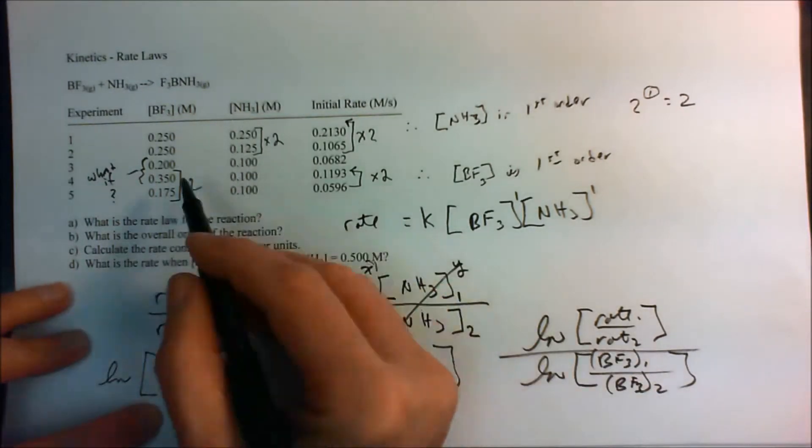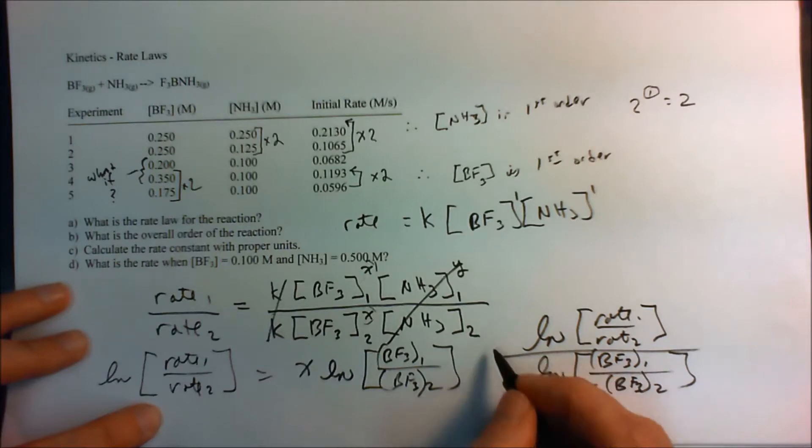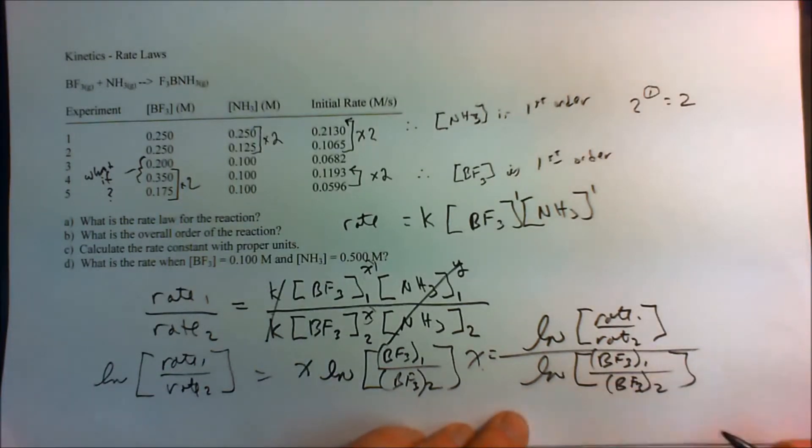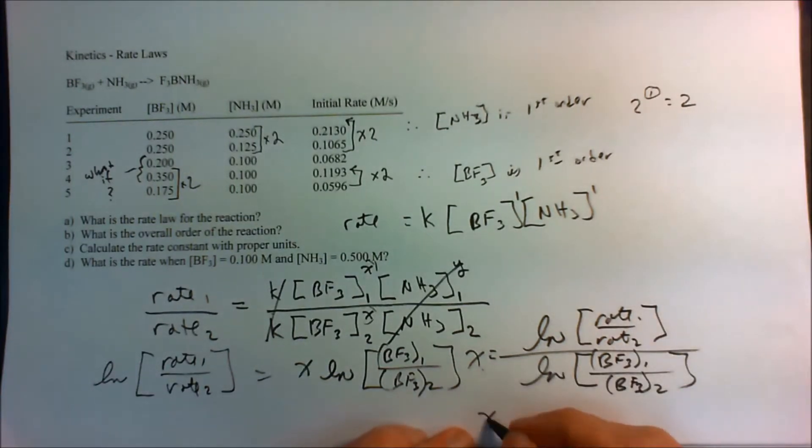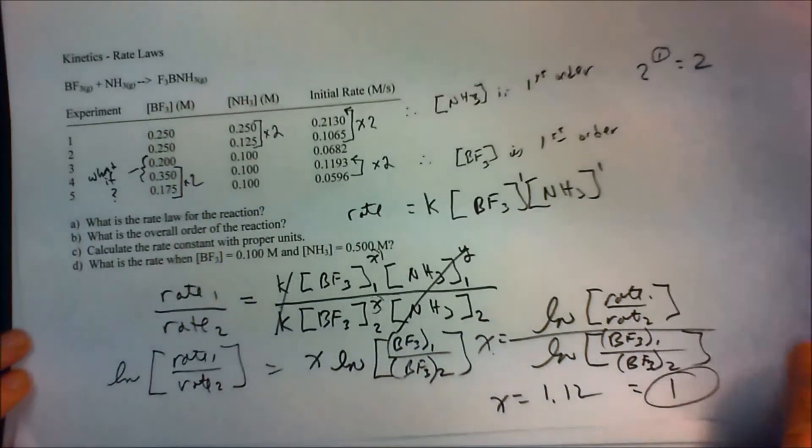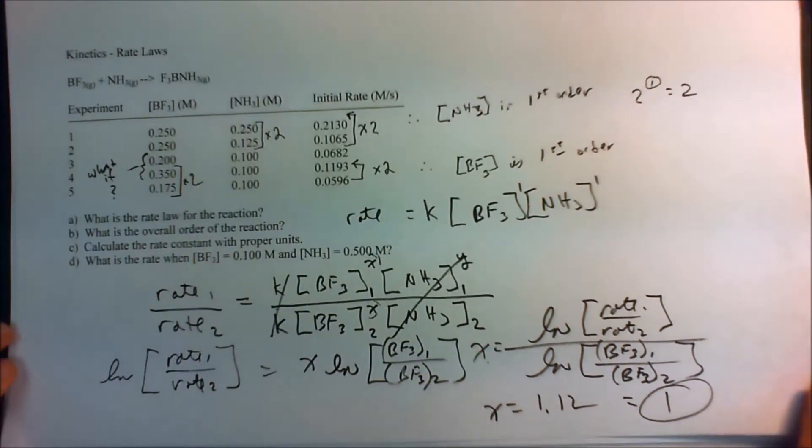And if we were to plug in these concentrations up here, this will give us X, we in fact get 1.12 if you plug those in. So X will equal 1.12, which is pretty doggone close to 1. And so our rate order with respect to boron trifluoride is first order, just like we determined by inspection up here. We can do the same thing for the other one as well. So you can just use your natural logarithms if you have to do that.